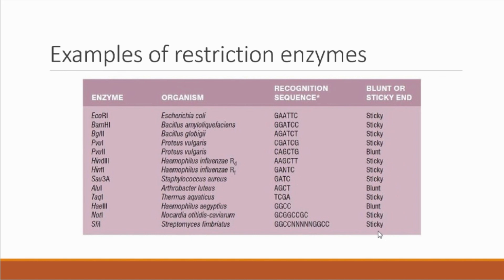In this last column there's an additional piece of information: blunt or sticky end. This refers to when the enzyme makes a cut through the DNA — does it cut bluntly, slicing directly through both strands of this double-stranded DNA at the same location? Or does it make a jagged cut? A jagged cut is referred to as a sticky end. On the next slide, I'm going to show you what that actually looks like.